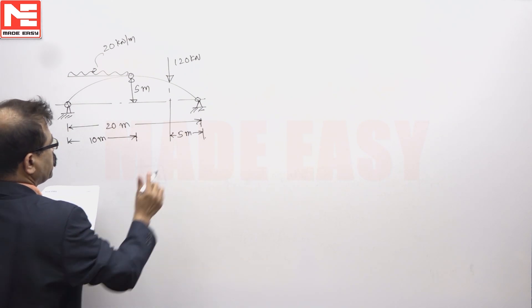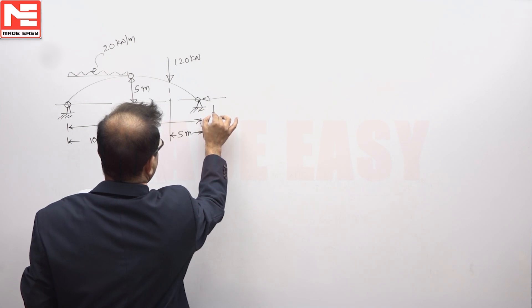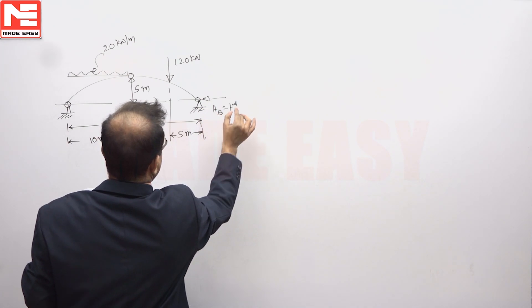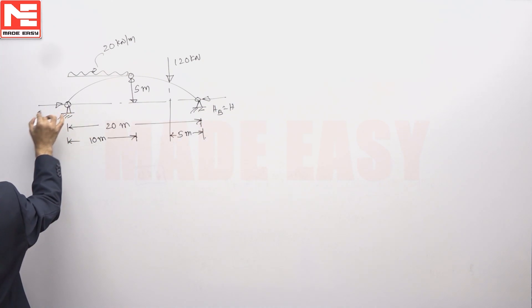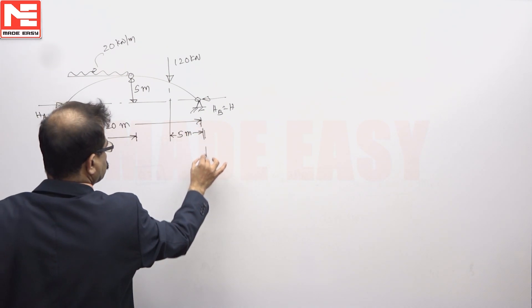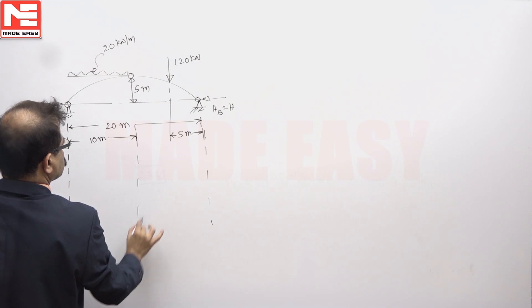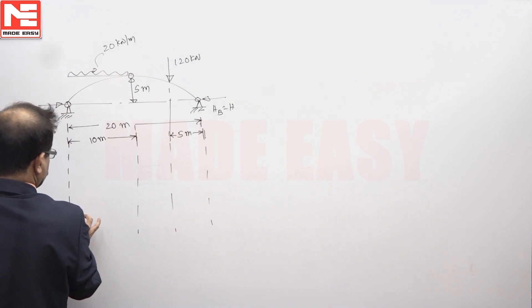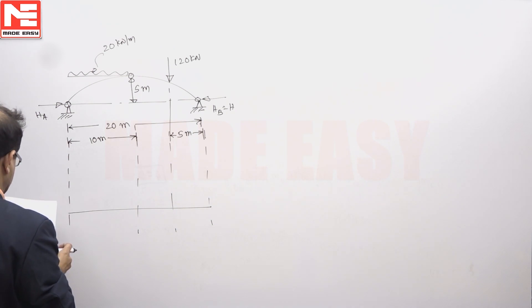We have to find horizontal reaction at A. If you want to find the horizontal reaction at A, you can draw ILD for horizontal thrust.